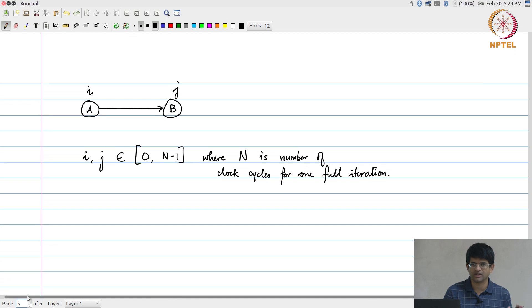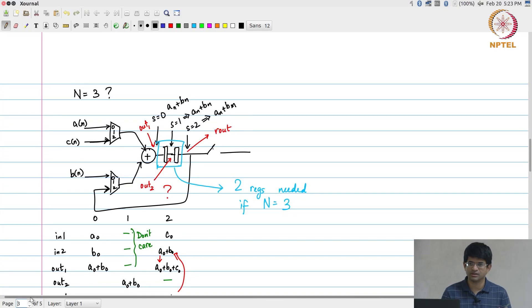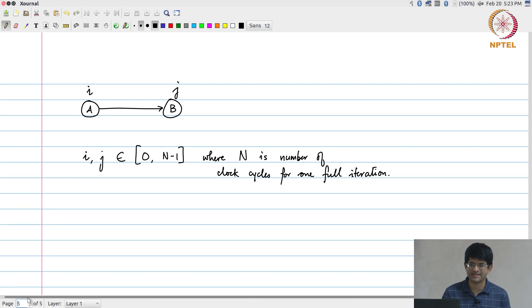All that comes into the topic of what is called scheduling, which is where we will go next after this. How did I decide that these are the time instants at which these operations need to take place? This is a very trivial example so it's easy to come up with that answer, but for the more complex example I will just give you some numbers magically which will give us a final architecture. How do I come up with those numbers is what we will see later.